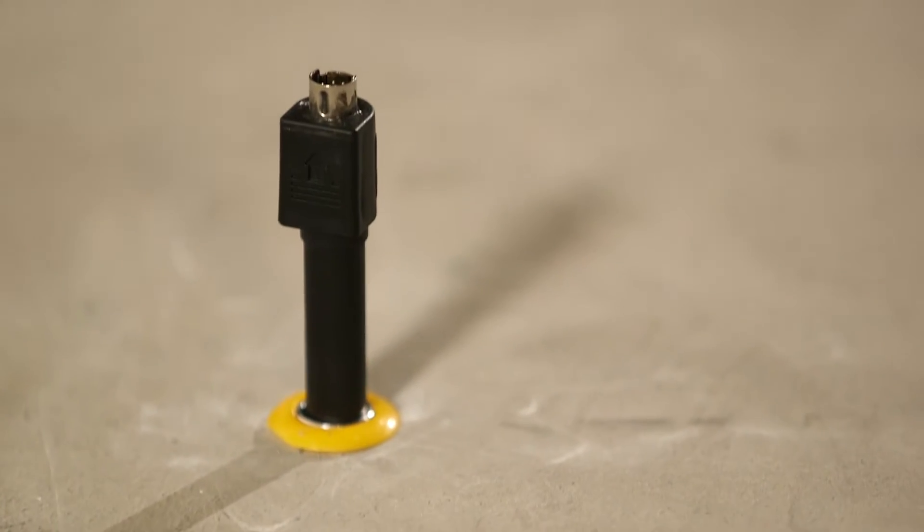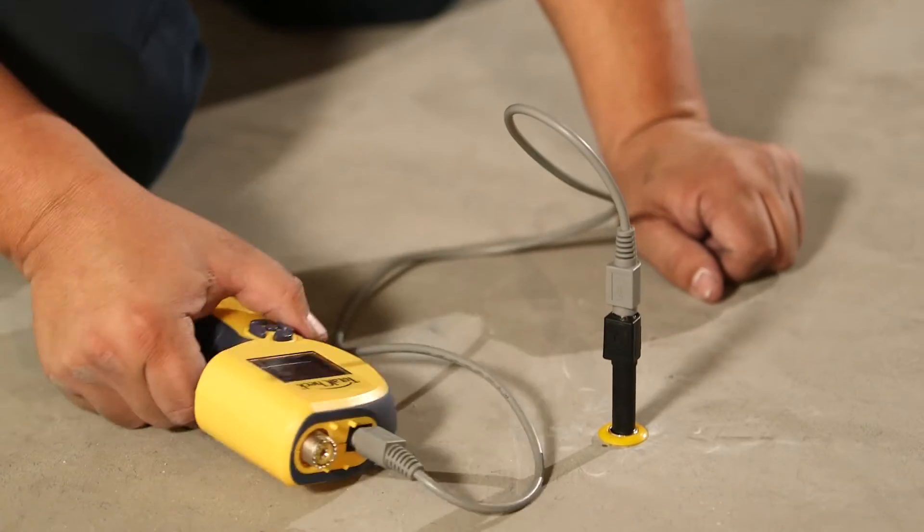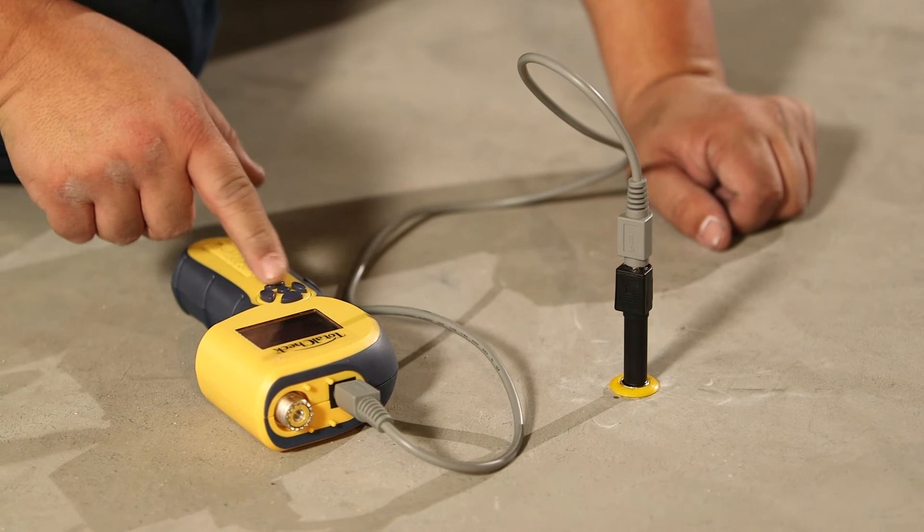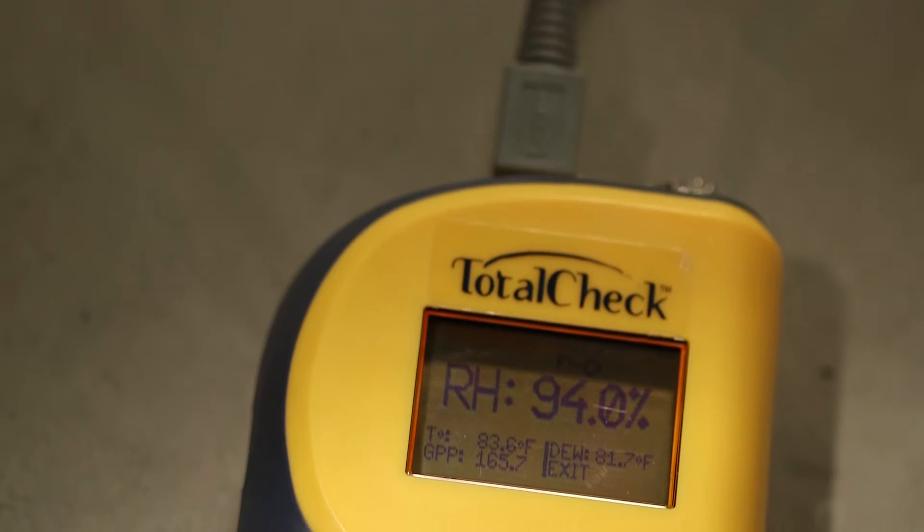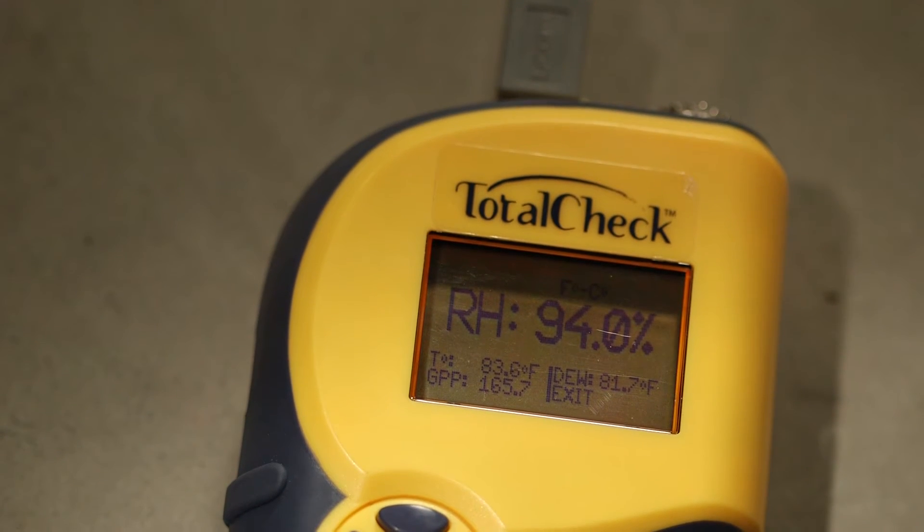After 72 hours, the air inside the plastic sleeve has reached equilibrium, and we are ready to take RH and temperature readings. These readings determine whether the slab is safe for flooring installation.